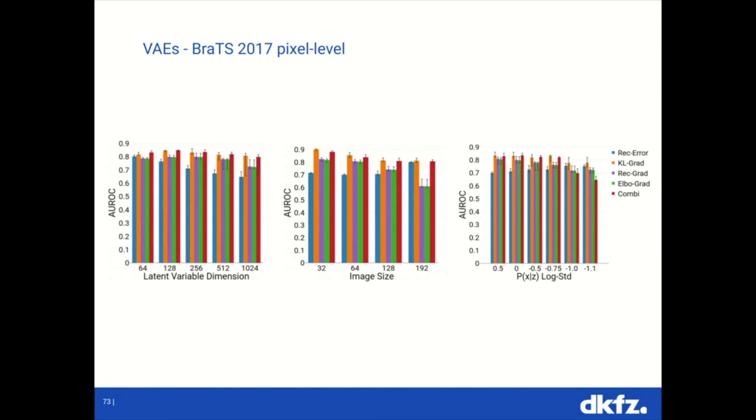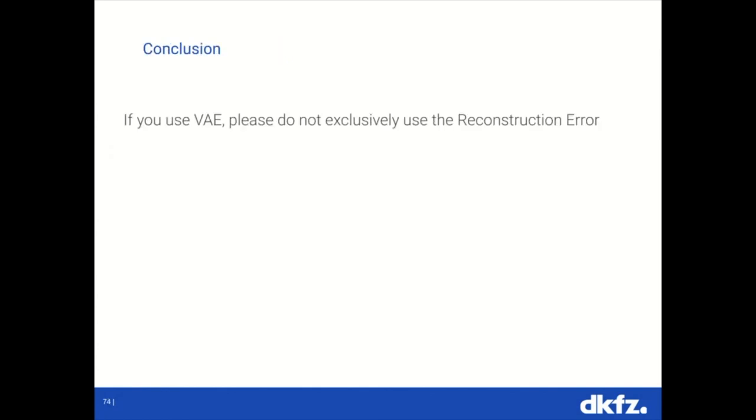So, what can we conclude now? If you use VAE for anomaly detection, please do not only use the reconstruction error. The VAE model framework has many more terms. There are a lot of other possibilities to integrate these, not just the saliency maps, but later other work also used some other methods to include this, and also worked quite well.